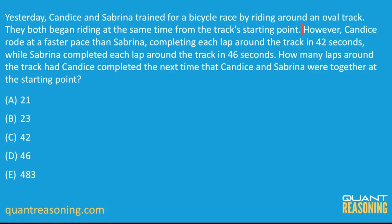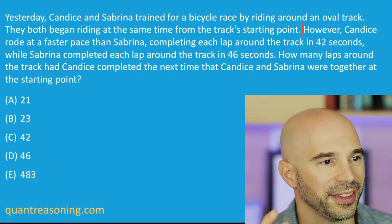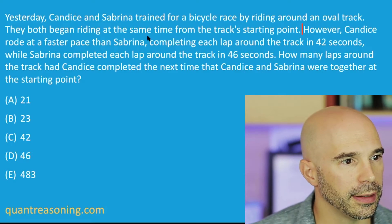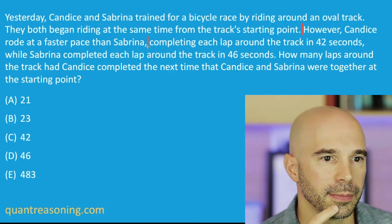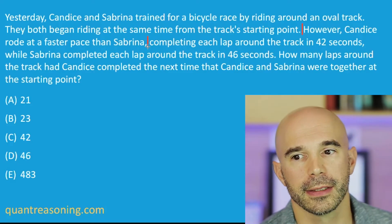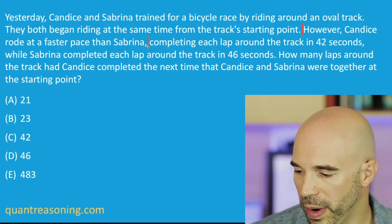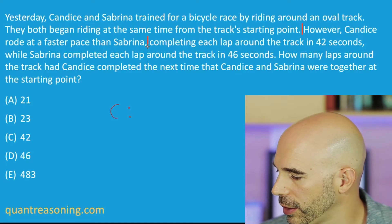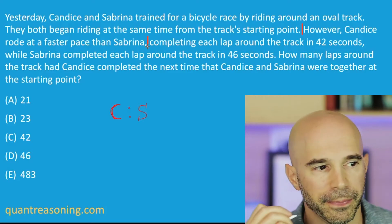If you were to just read up to here, and then let's say I ask you — if you were allowed to highlight just one thing from those two sentences, what would it be? The fact that they started at the same time from the same point. They have different speeds. If I call them C and S for short, C is faster than S — starting with the faster one, setting up a ratio.